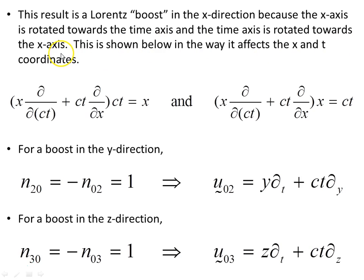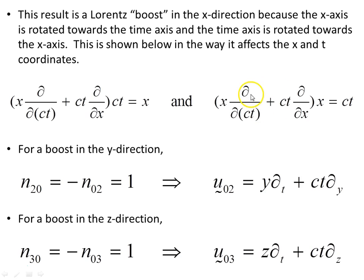This is shown below in the way it affects the t and x coordinates. Taking the time coordinate multiplied by the generator: d/dx of ct is 0, and d/d(ct) of ct is 1 times x, giving us x. Multiplying the generator by the x-coordinate gives the time coordinate, which is exactly what the Lorentz transformation should do. For a boost in the y-direction we use these indices and get this vector, the generator of boost in the y-direction. For a boost in the z-direction, same method gives this object.